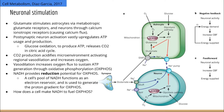CO2 production acidifies the microenvironment and activates regional vasodilation, which increases blood flow and oxygen. Since CO2 doesn't diffuse very well in blood, it gets converted into bicarbonate by carbonic anhydrase, and this reaction produces a proton, meaning it acidifies the blood. So CO2 from neurons burning glucose produces protons that acidify the microenvironment, and this activates smooth muscle cells to dilate blood vessels, increasing oxygen flux to sustain ATP generation through oxidative phosphorylation.